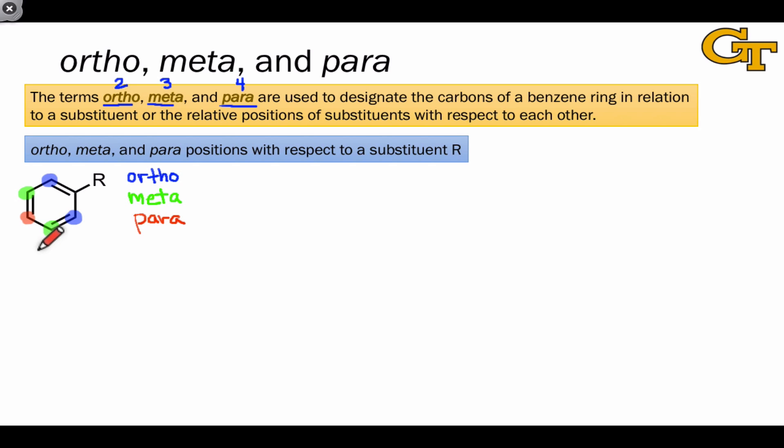We can also use the terms ortho, meta, and para to refer to the relationship between two identical or different substituents in a disubstituted benzene. For example, in the molecule shown here, the substituents R and R' are connected to carbons that are themselves directly connected. This means that they share a one-two relationship. If we arbitrarily call the carbon connected to the R group carbon one, the carbon connected to R' is carbon two. The more traditional term for this relationship is an ortho relationship between the substituents. We would also say that this is an ortho disubstituted benzene.